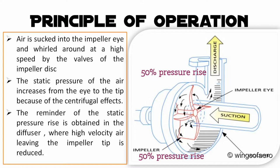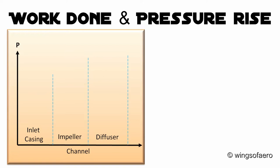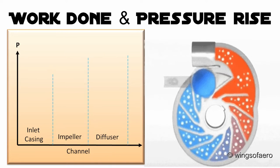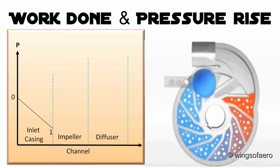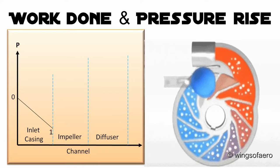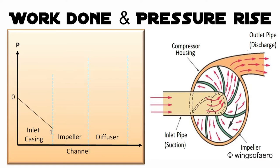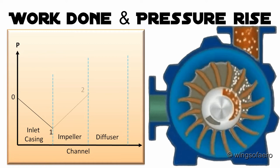The contribution of each component of the compressor in producing the pressure rise in the stage is shown in the figure. The inlet casing with acceleration nozzle directs the airflow into the impeller eye or inducer. Since the velocity of air increases as it approaches the eye, its static pressure decreases accordingly. In the impeller, the blades impart a swirling motion to the air, which leaves the impeller tip at a very high velocity.